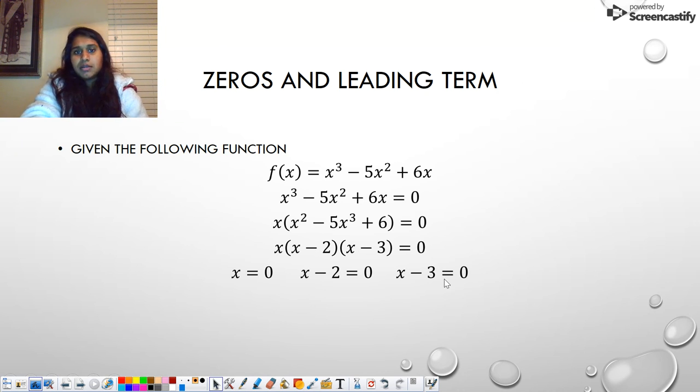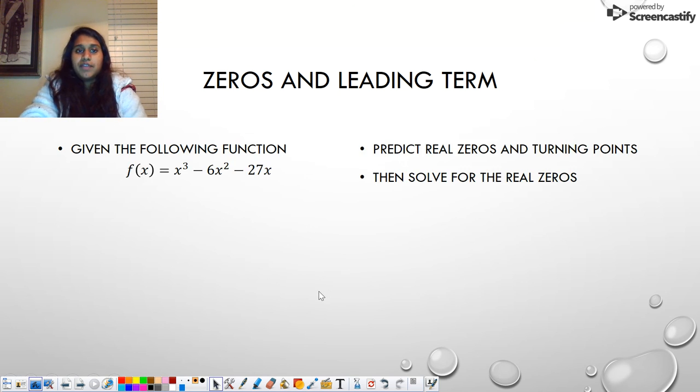And the third one, X minus three equals zero. And then you just solve. So that becomes positive two, positive three, and zero. So that was three real zeros. Not an estimate anymore because I have now done that solve. I've already figured that out.